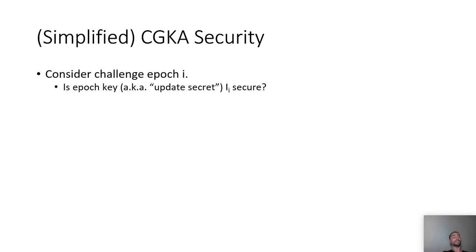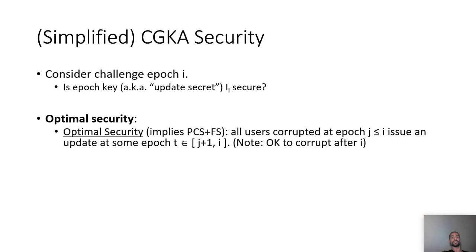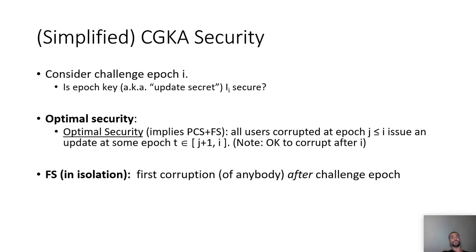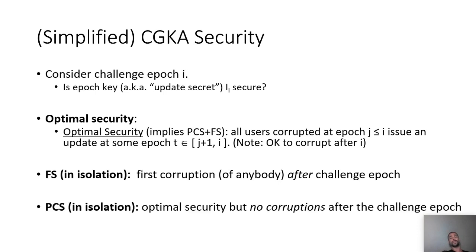Consider an adversary that challenges epoch I. The question is: is the epoch key, also known as the update secret of epoch I, secure? The notion of optimal security, which implies PCS and FS, requires that all users corrupted at epoch J prior to or equal to I issue an update operation at some epoch T in the range (J+1, I). So if there are corrupted users before epoch I, those users just need to issue an update operation before epoch I. We also allow corruptions after epoch I. We also consider two weaker notions: forward security in isolation, where corruptions can only happen after the challenge epoch; and PCS in isolation, which is like optimal security but no corruptions are allowed after the challenge epoch.